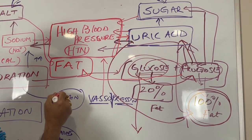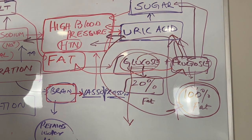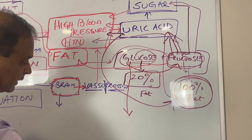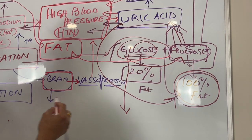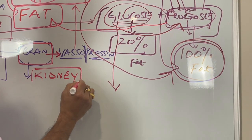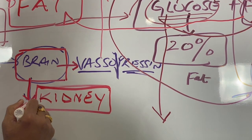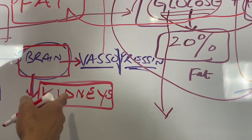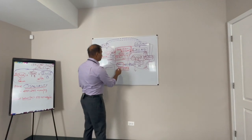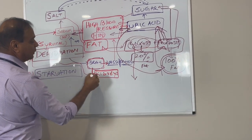Vasopressin acts by connecting blood pressure, and the brain is the one that produces it, so I am going to connect it here. The kidneys retain water by this mechanism. I will write the kidneys here. Now we have all the organs that have this interplay — the body is working like a systems approach. The kidneys also have a big role in retaining sodium, and blood pressure is controlled through the kidneys and the brain and how these interconnections happen.